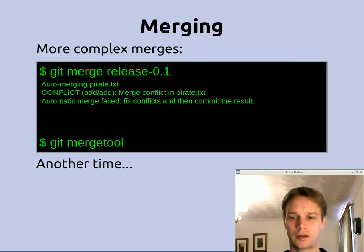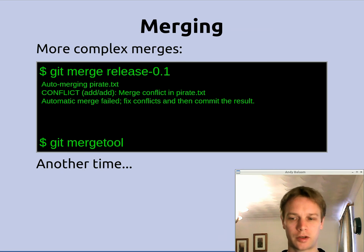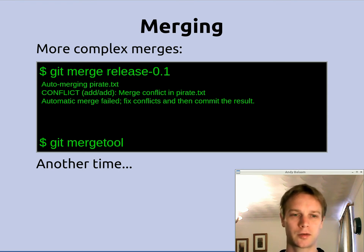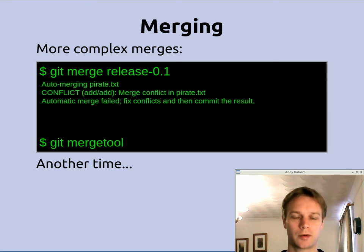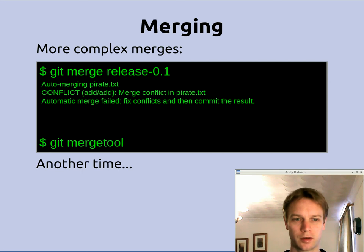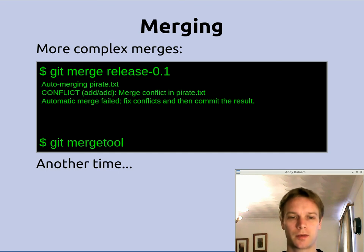If something went wrong and something didn't merge correctly, Git won't immediately commit it — it will stop and ask you to do the merge manually. Here's what will happen: imagine that in both the release branch and the master branch we added a new file called pirate.txt containing pirate sayings. When we do git merge release 0.1 while on the master branch, it's going to tell us there's a conflict — the same file was added in both branches with different contents. One way to resolve this conflict is to use git mergetool, which will open up a three-way merge tool that allows you to manually choose which bits of which file you want. I'll cover that in a later video.